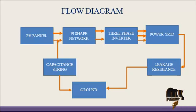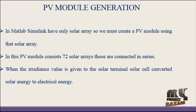The first PV module generation is created by a PV equivalent circuit. In this PV module contains 72 solar arrays connected in series. When the irradiance value is given to the solar terminal, the solar cell converts solar energy to electrical energy.